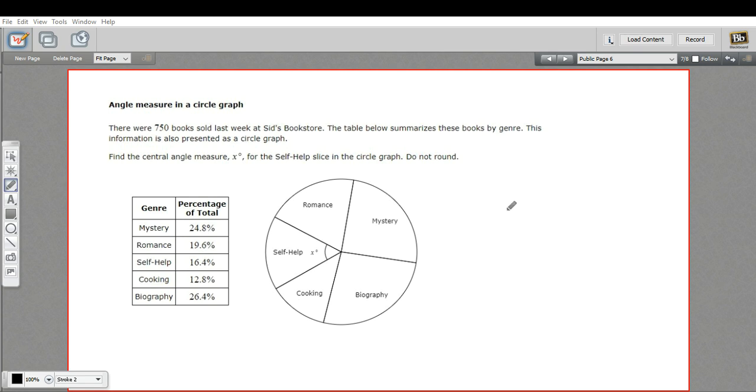So we know the angles, the total angles in a circle, 360. So we just need to take 16.4% of that.